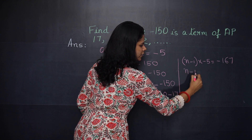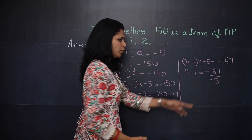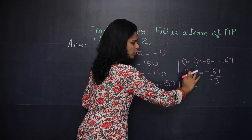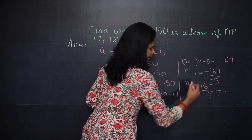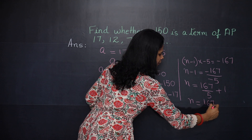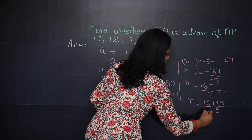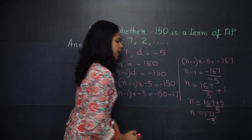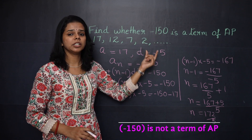So n − 1 = −167 ÷ −5 = 167/5. Taking the LCM, n = (−167 + 5) / 5 = 172/5, which is not a whole number. So −150 is not a term of the given AP.